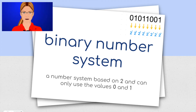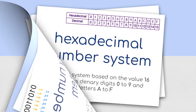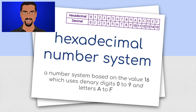The binary number system: a number system based on 2, and can only use the values 0 and 1. Hexadecimal number system: a number system based on the value 16, which uses denary digits 0 to 9 and letters A to F.